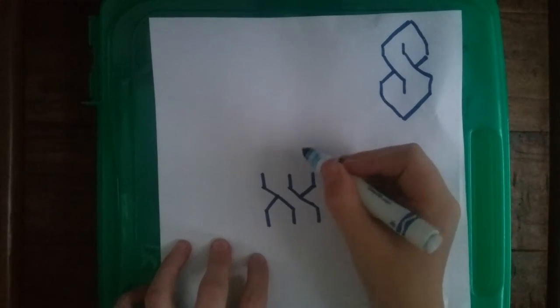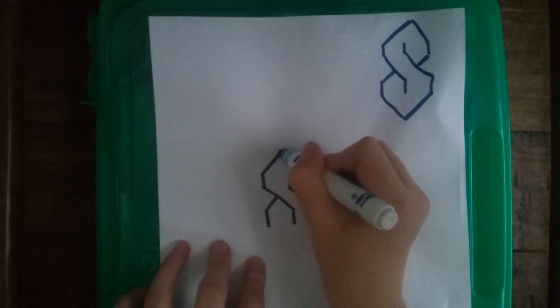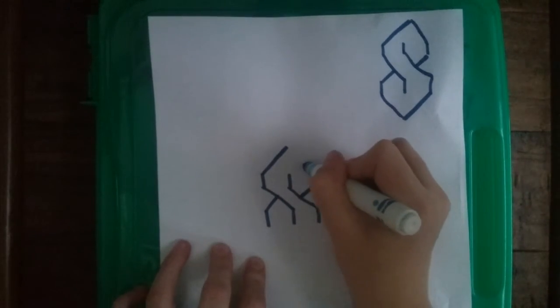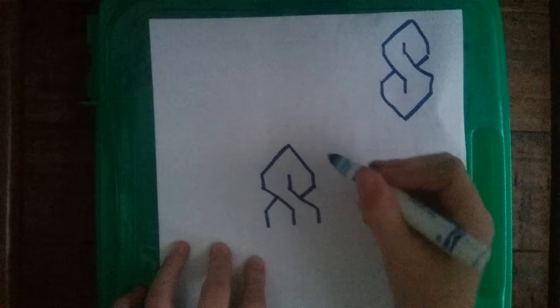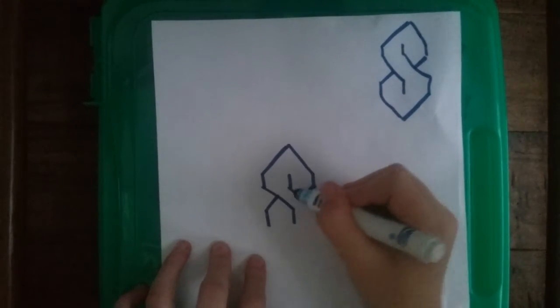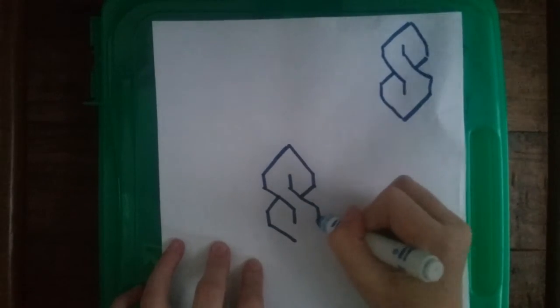And then at the very top you're going to draw a triangle shape that ends right in the middle. You're going to connect these two top lines to it. Same with the two bottom lines.